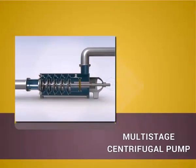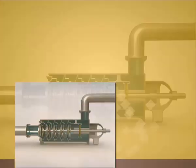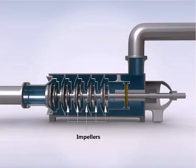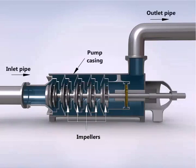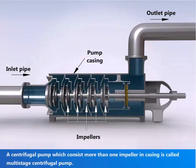In this video we are going to see about Multi-Stage Centrifugal Pump. A centrifugal pump which consists of more than one impeller in a casing is called a Multi-Stage Centrifugal Pump. Its main components include impellers, inlet pipe, outlet pipe, and pump casing.